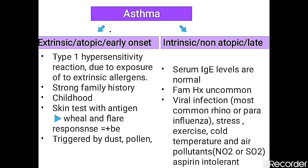We divide asthma into two broad categories. Extrinsic means the stimulus is extrinsic to our body. Intrinsic, also called non-atopic, is not related to IgE antibodies — it is intrinsic to our system. Non-atopic means it's not related with IgE antibodies and it's late onset.